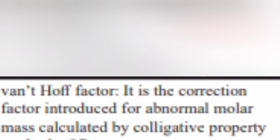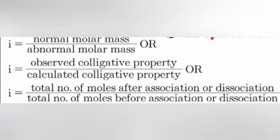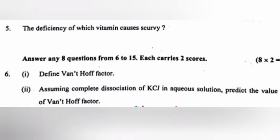Question 6: Define Van't Hoff factor. Answer: The Van't Hoff factor is a correction factor introduced for abnormal molar mass calculated by colligative property methods. It is defined as: i = normal molar mass / abnormal molar mass, or i = observed colligative property / calculated colligative property.